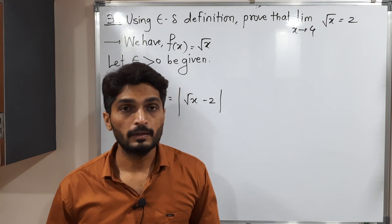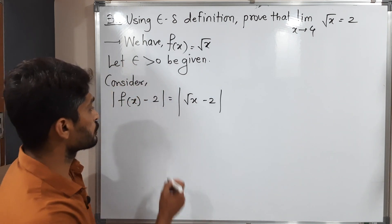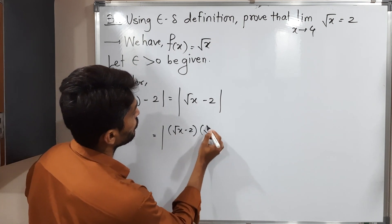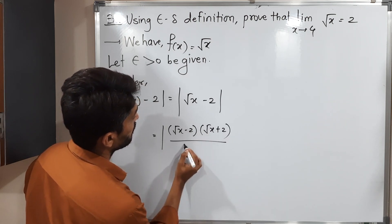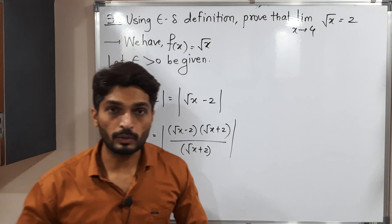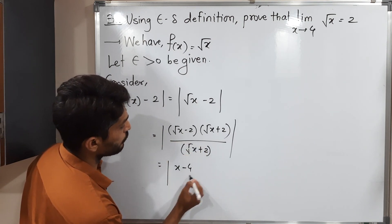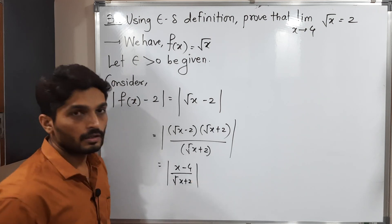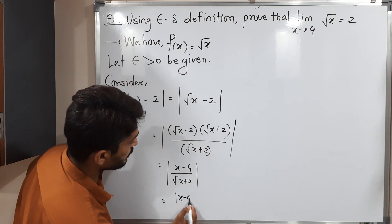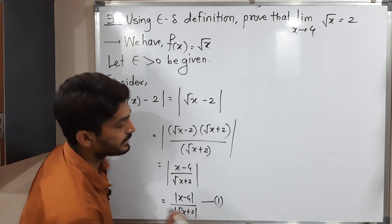To address this, I will multiply numerator and denominator by (root x + 2). So we get |root x - 2| · |(root x + 2)/(root x + 2)|. Using the identity (a - b)(a + b) = a² - b², the numerator becomes x - 4. So this equals |x - 4| / |root x + 2|. Let us call this equation number 1.